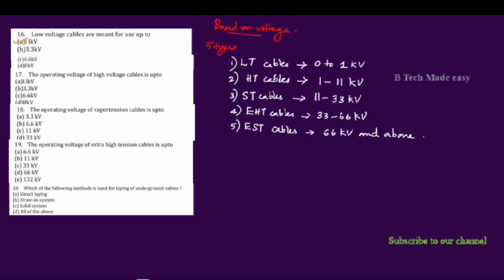The operating voltage of high-tension cables is 1 to 11 kV, with options 1.1 kV, 3.3 kV, 6.6 kV, and 11 kV — the answer is 11 kV. The operating voltage of super-tension cables is 11 to 33 kV — the answer is 33 kV. The operating voltage of extra high-tension cables is 33 to 66 kV — the answer is 66 kV.